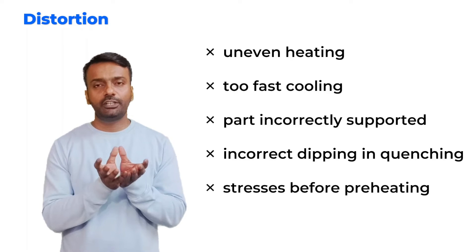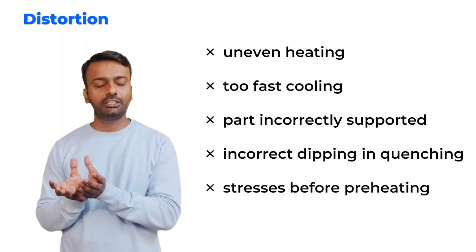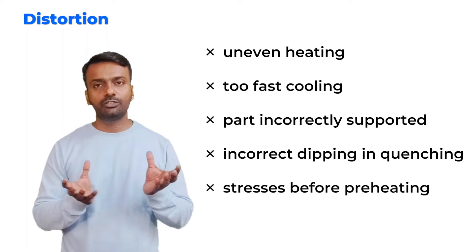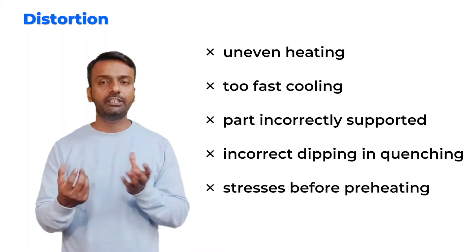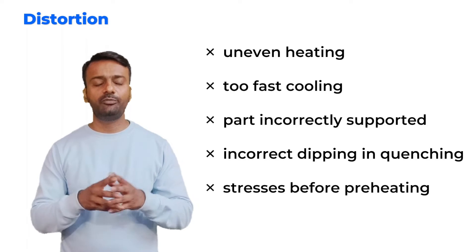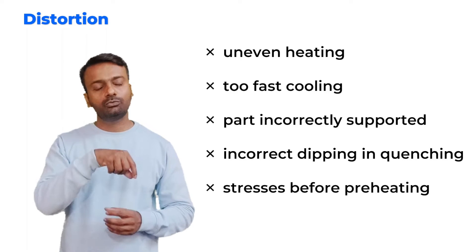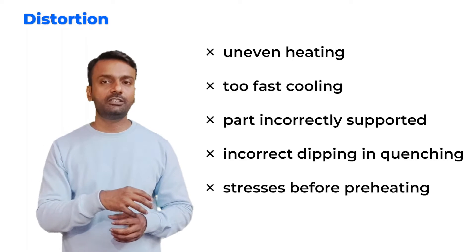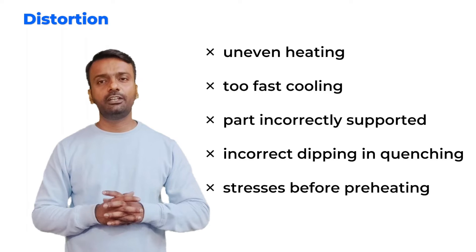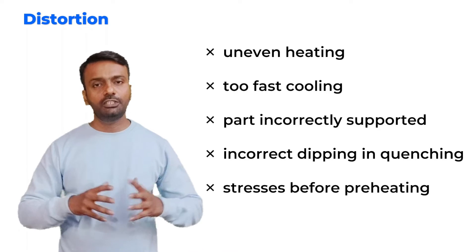Parts which are incorrectly supported in the furnace, where you are supporting at one end but not the other end, will have distortion because the heat circulated inside the furnace will be uneven. Incorrect dipping while quenching, where you are dipping it very slowly, means one side of the sample is cooling faster than the other side. This will create a lot of stresses and because of this, there will be distortion.